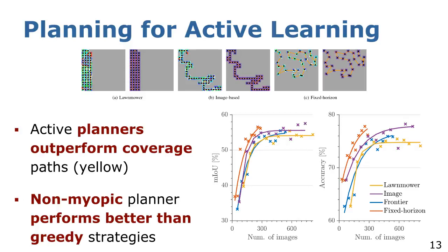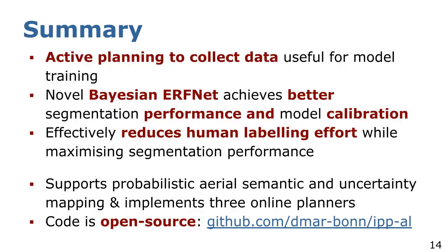To summarize, we introduced a general path planning framework for active learning and aerial semantic mapping scenarios. Our framework exploits a Bayesian network to estimate model uncertainty in semantic segmentation. A key aspect of our work is that we link the mapped model uncertainty to a planning objective, guiding UAVs to collect the most informative images for network training. This pipeline reduces the total number of images that must be labeled to maximize segmentation performance, thus conserving human effort, time and cost. We open-sourced our code for usage, benchmarking and development by the community.